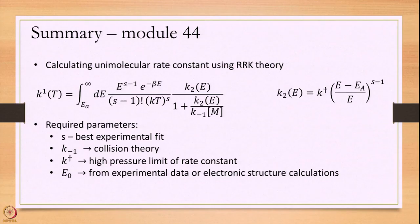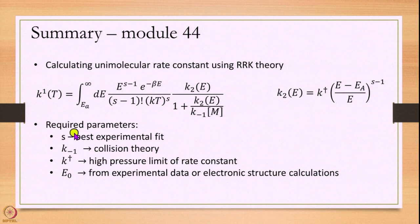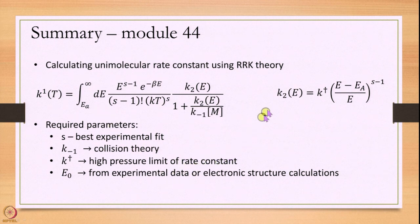In summary, we have shown how to calculate the unimolecular decay rate constant using the RRK model. The model comprises S harmonic oscillators all with the same frequency. The parameters needed are: S (chosen ad hoc), K−1 (collision theory), K† (high-pressure limit of rate constant), and EA or E0 (barrier height from experiment or electronic structure). With these, K2, K−1, and K1 are calculated and the integral is evaluated, usually by computer. Thank you.